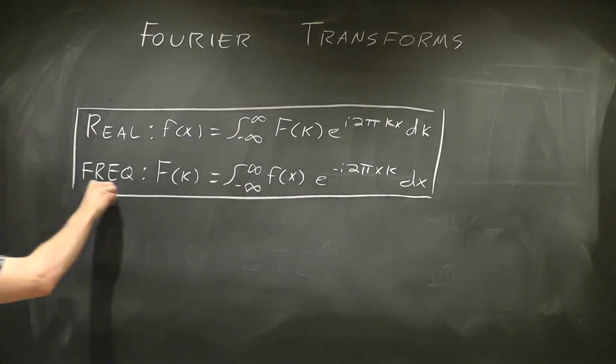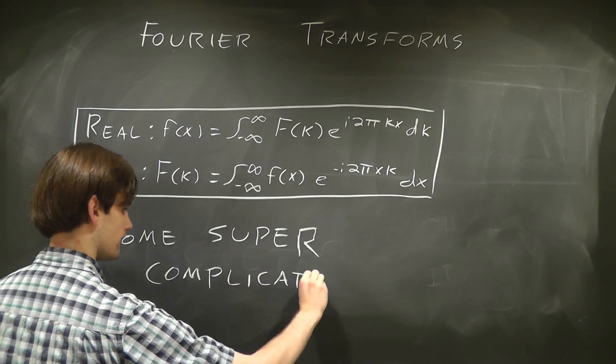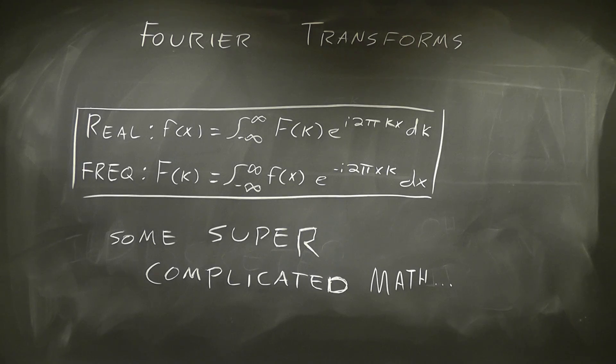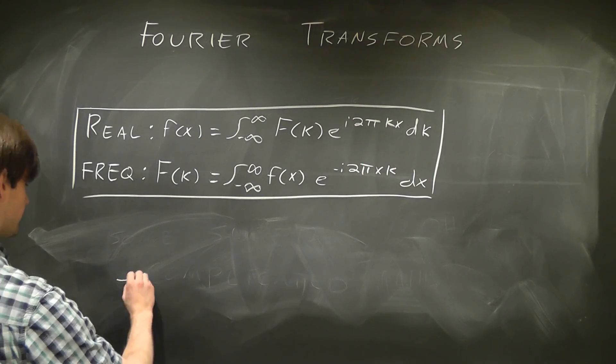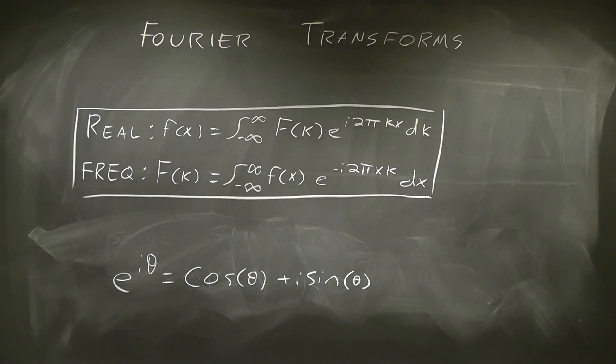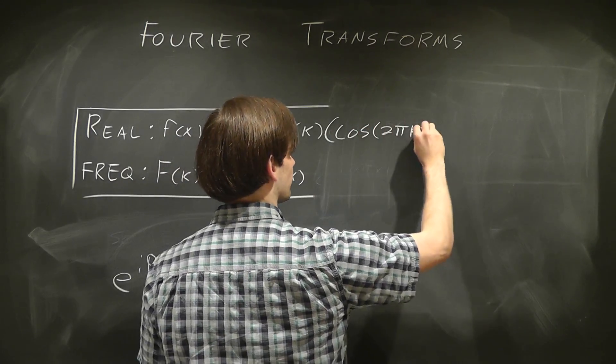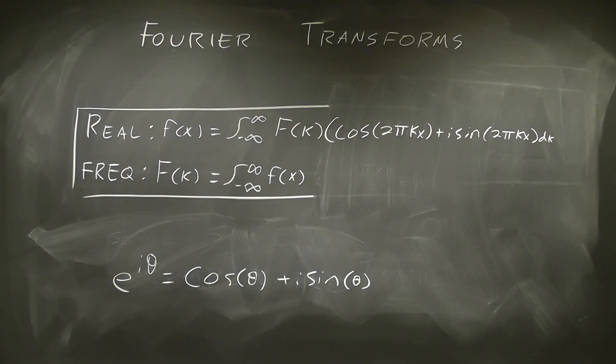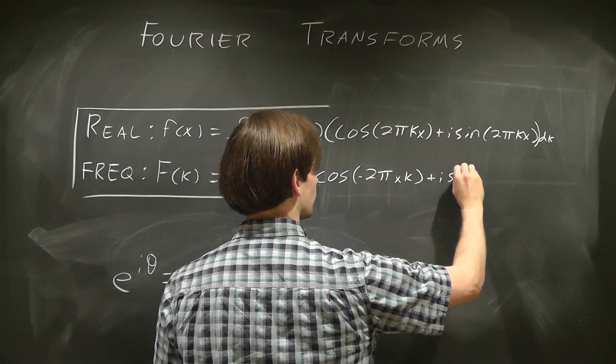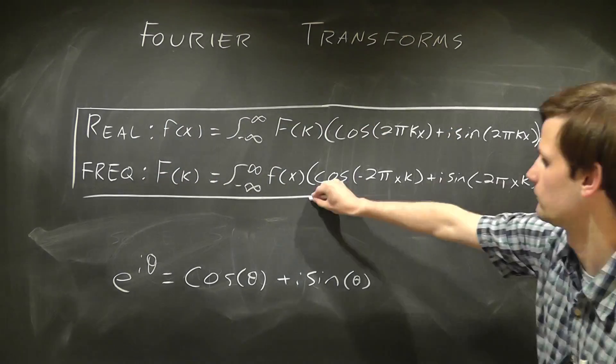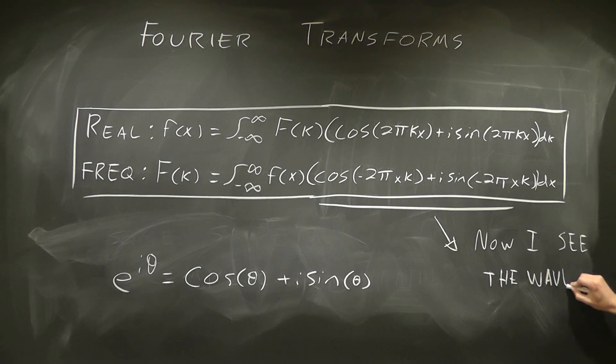As I mentioned, it's not particularly obvious how these formulas work, but it becomes a little bit more obvious when we make a basic substitution. e to the iθ is equal to cosine of θ plus i sine of θ. Sure, the sine is still in imaginary space, which is kind of complicated, but everything becomes simpler now that we can actually see the waves.